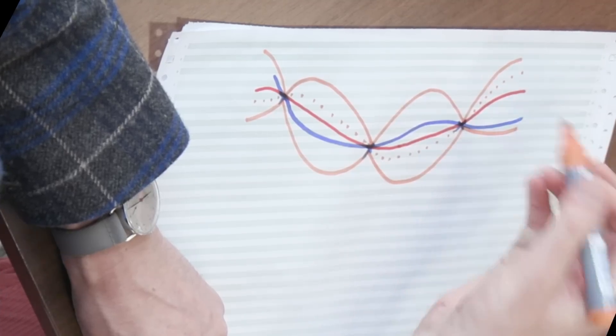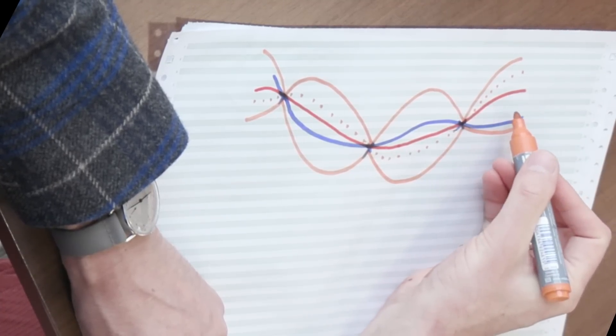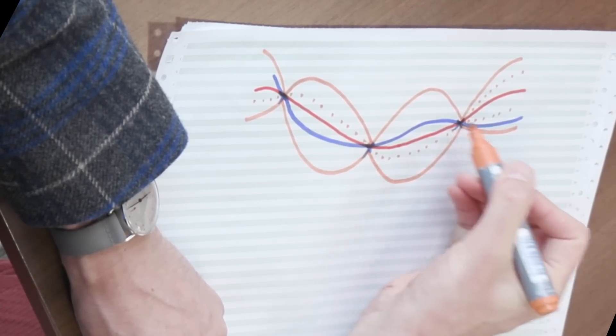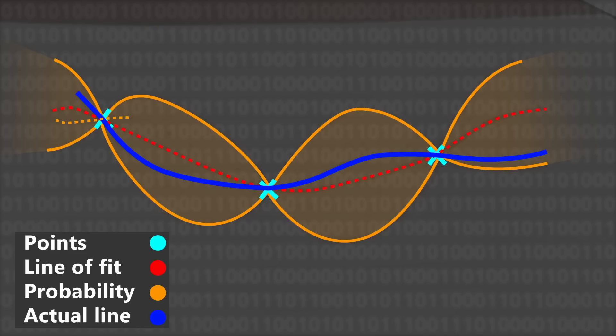These dots capture one function that's possible given what we know. Here's another one. So these orange envelopes that I've drawn, these estimates of uncertainty, lie at the core of the Bayesian approach to machine learning.